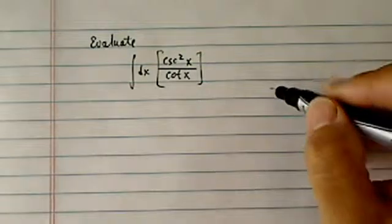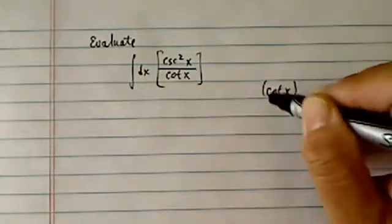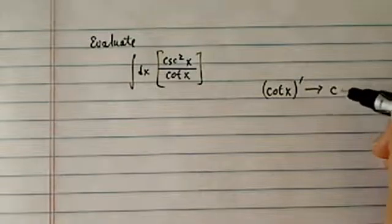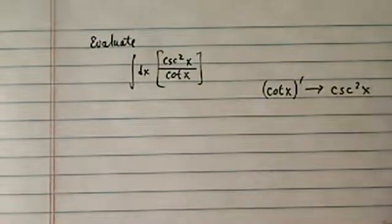what you need to recognize is this: Cotangent, if you take a derivative, you end up with cosecant squared.